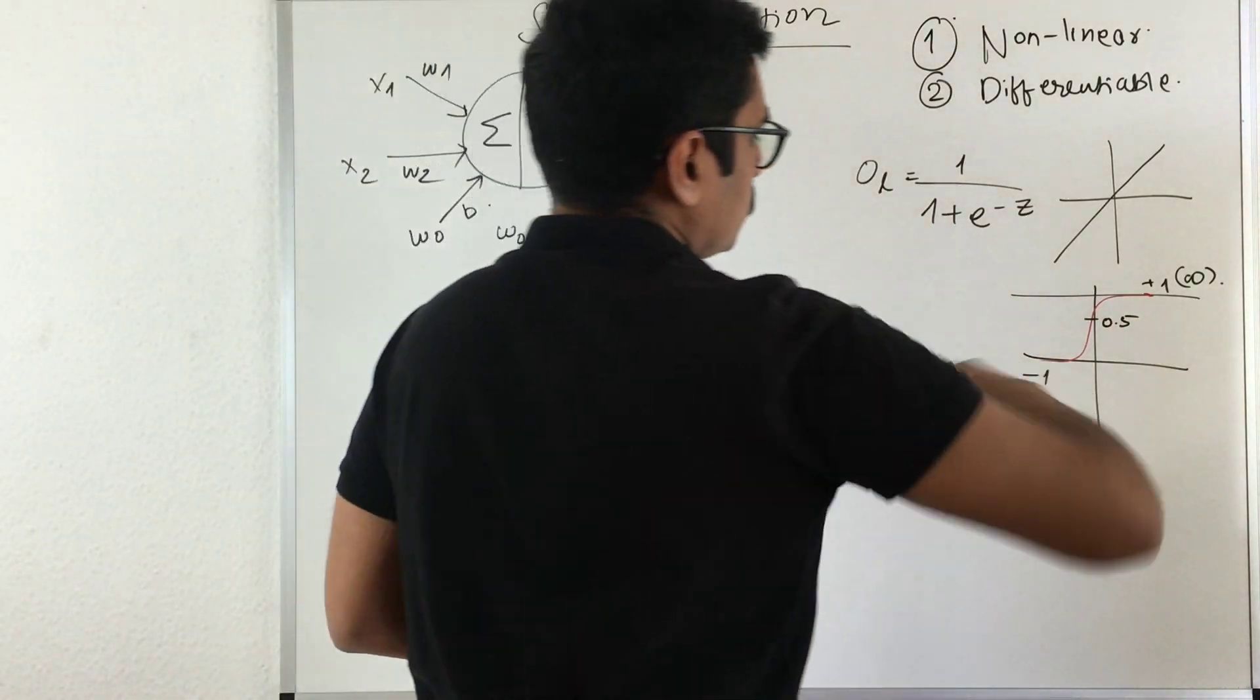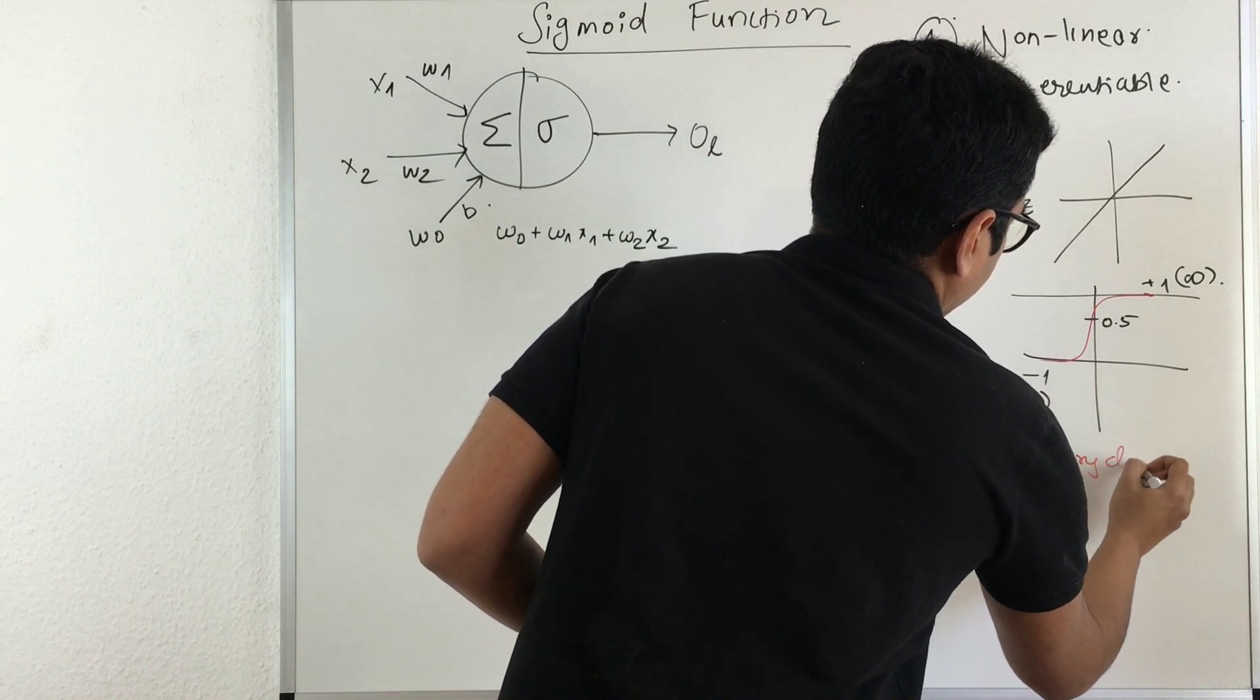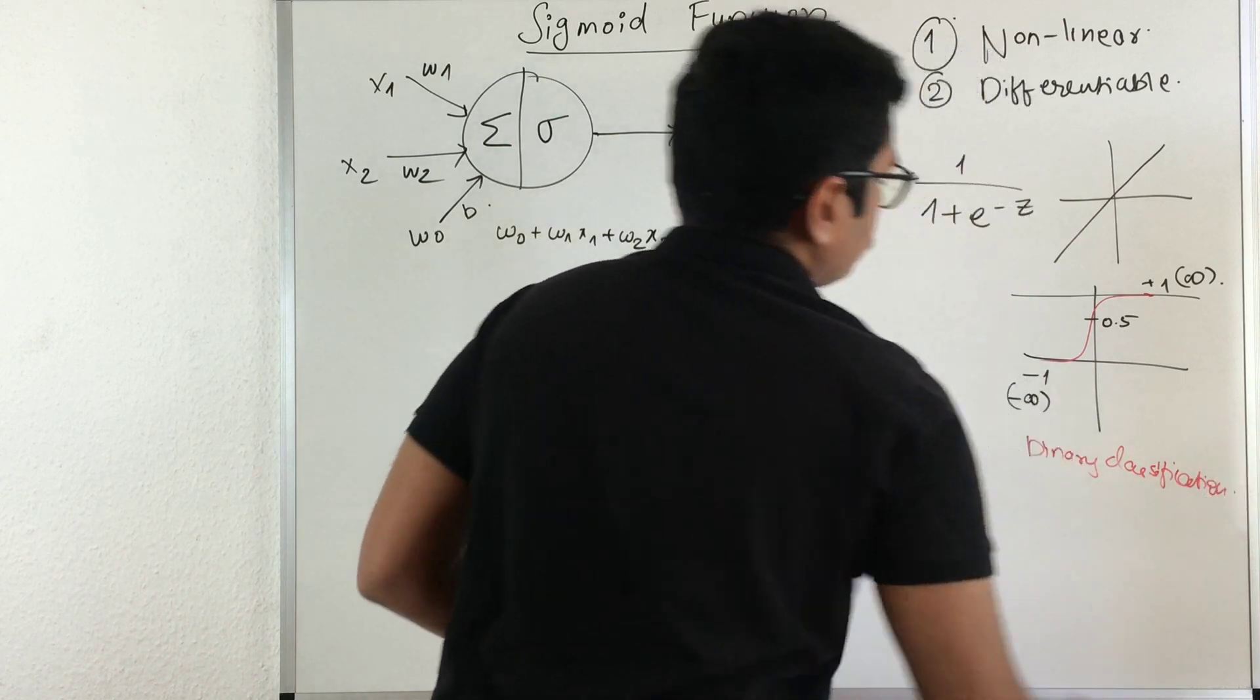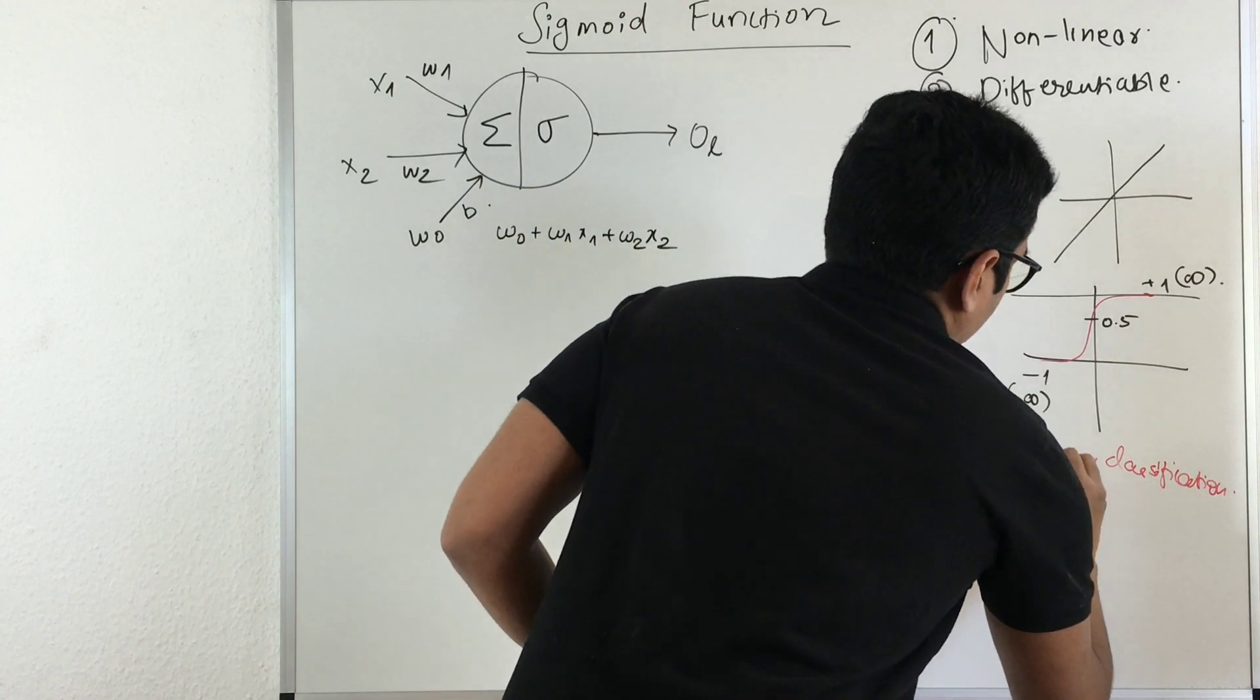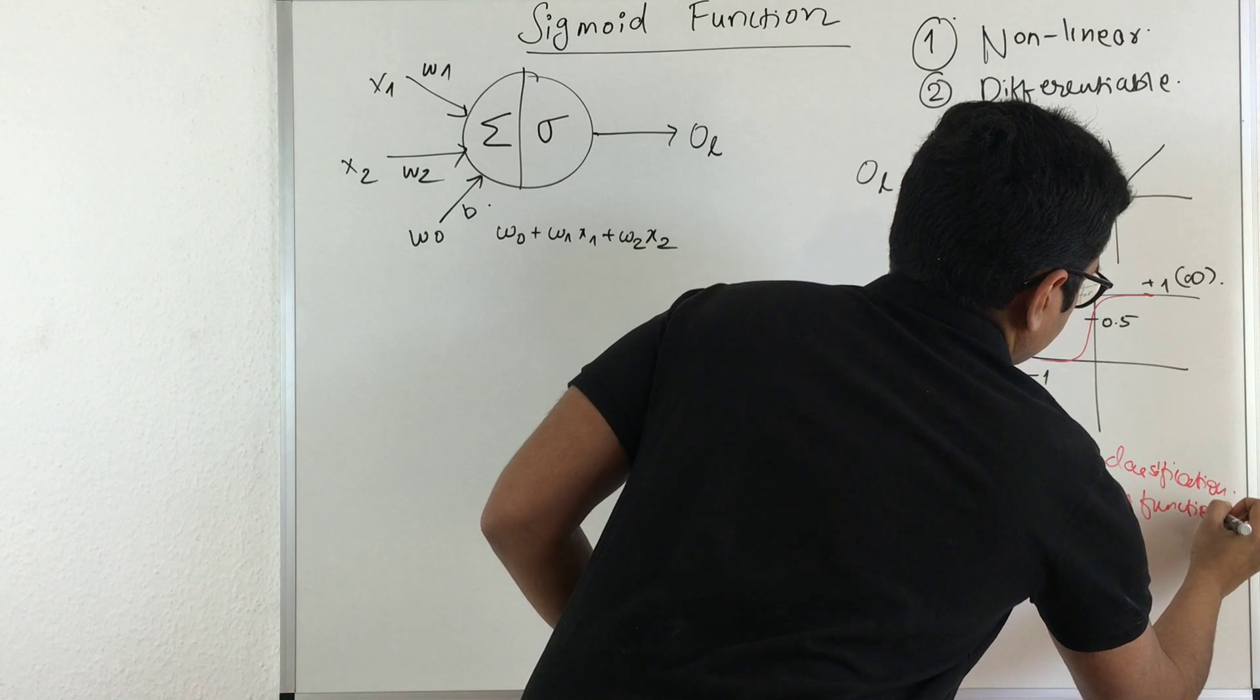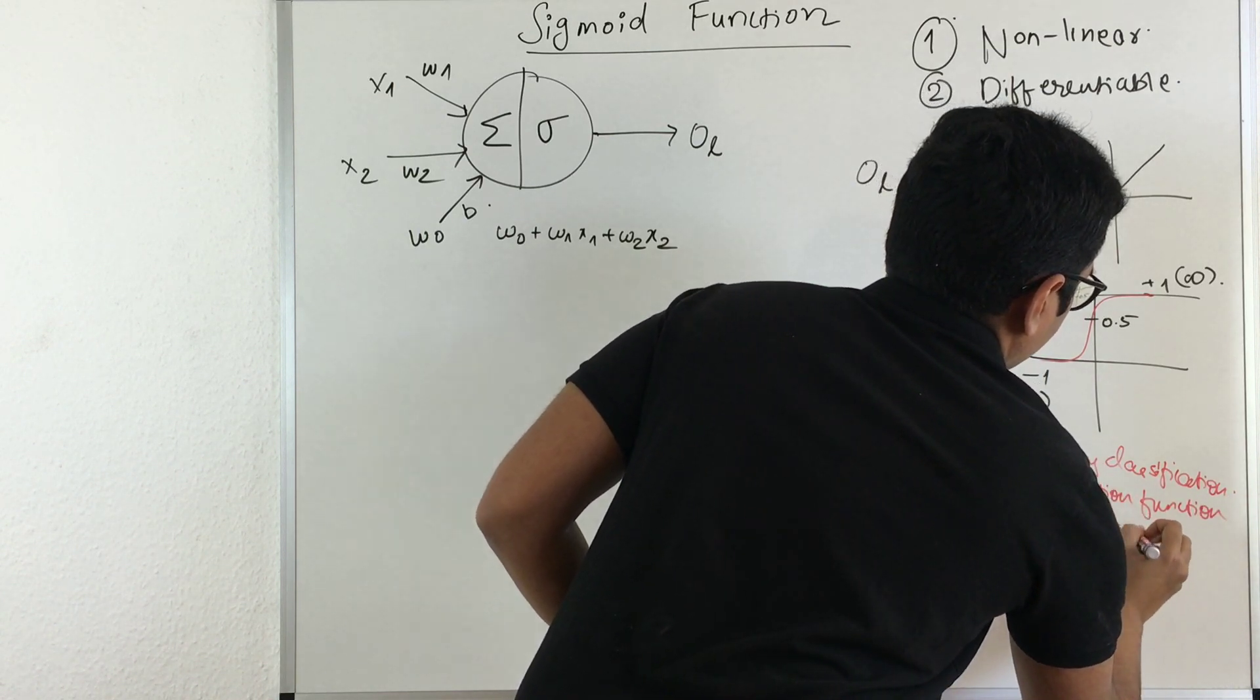This essentially is used for your binary classification—that is 0 or 1—and it's also used as an activation function and for calculating probability values.